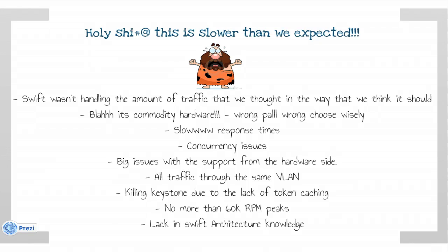We went to production with that architecture, but the results were not as expected. We encountered many problems: slow response times, concurrency issues, big issues with hardware support, all traffic on the same VLAN, Keystone being killed due to lack of token caching, no more than 60k requests per minute at peak, and a lack of Swift architecture knowledge. I will walk through each of these points and share our experience solving them.